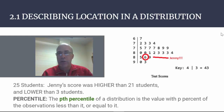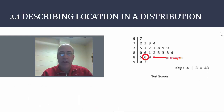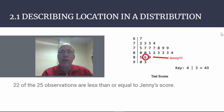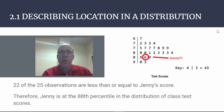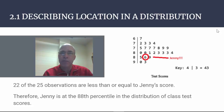The definition: the pth percentile of a distribution is the value with p percent of the observations less than or equal to it. For Jenny, 22 of the 25 observations are less than or equal to her score — 22 out of 25 — so Jenny is at the 88th percentile in the distribution of class test scores.